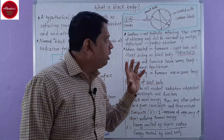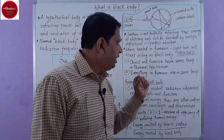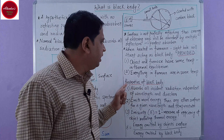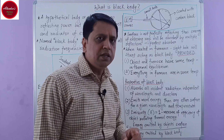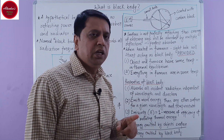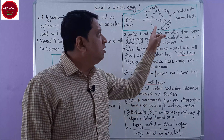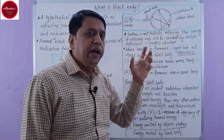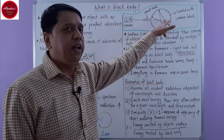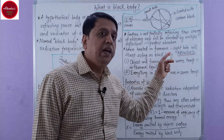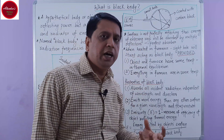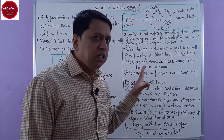In terms of absorption, this sphere can be termed a black body. Now if we increase the temperature of this body in a furnace — provided that the object and furnace have the same temperature, that is, are in thermal equilibrium, and everything in the furnace is at the same temperature with no flames or bubbles — under such conditions, this whole body will start acting as a very good emitter. Whatever energy is inside will start reflecting through this hole, so this hole will start acting as a perfect emitter, and the object will behave like a perfect black body.